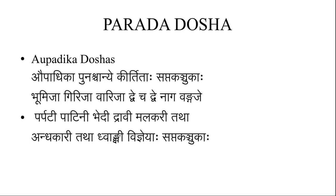Then comes avapathika doshas: Avapathika punaschani kirtida sapta kanchuka. This is also known as sapta kanchuka dosha. They are bhumija, girija, varija, and two each from naga and vanga — total seven doshas. They are given the names: Parpadi, Padini, Bedi, Dravi, Malakari, Andhagari, and Dhwamkshi — these are the sapta kanchuka doshas.